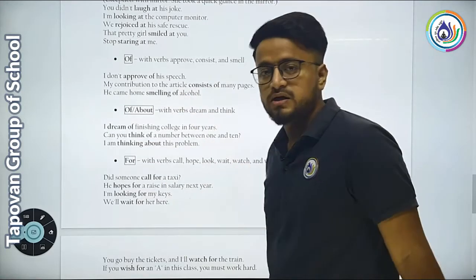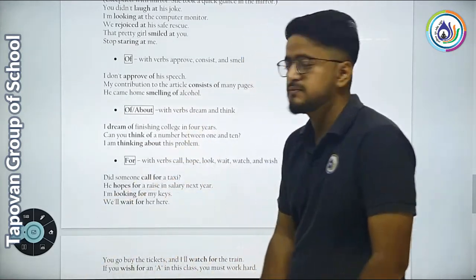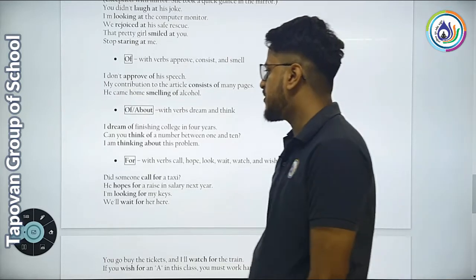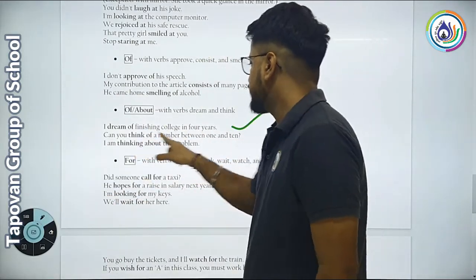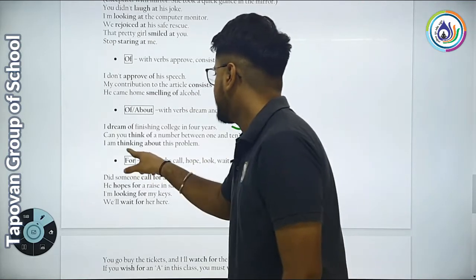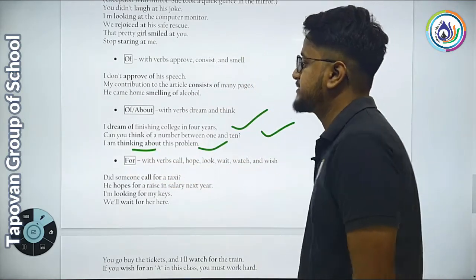Of or about are used with verbs dream and think. I dream of finishing college in four years. Can you think of a number between one and ten? I am thinking about this problem.